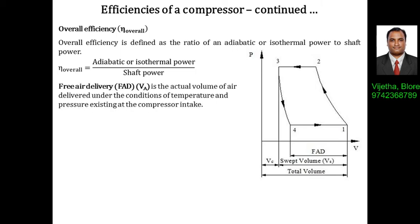We also have one more concept called free air delivery. On a PV diagram, the volume V1 to V4 is considered as free air delivery. As explained in the introduction classes on reciprocating compressors, the work done expression can be solved in two different ways — one considering the clearance volume and one neglecting it.